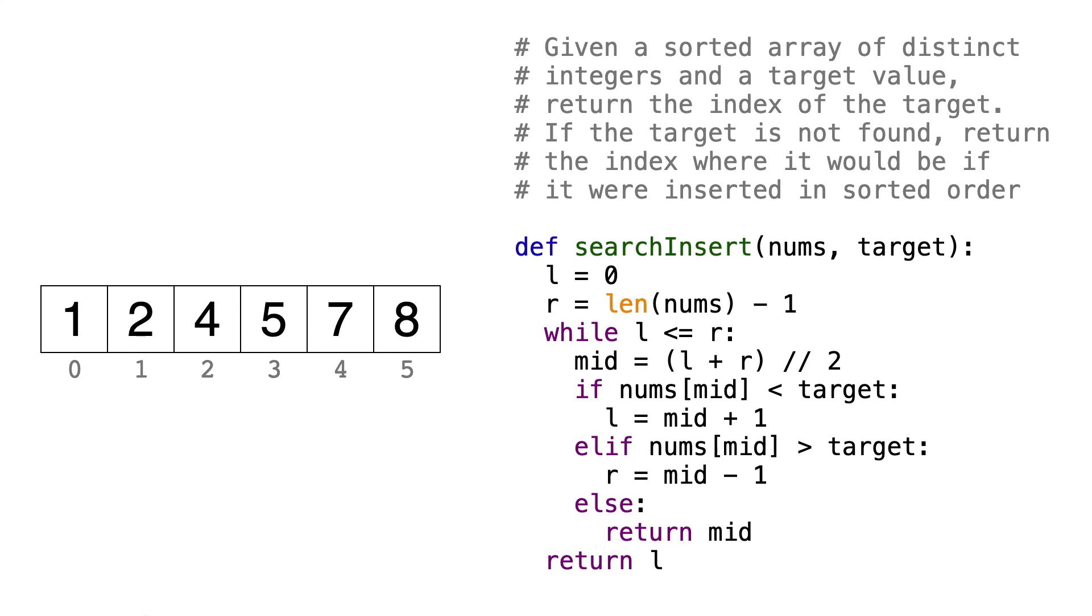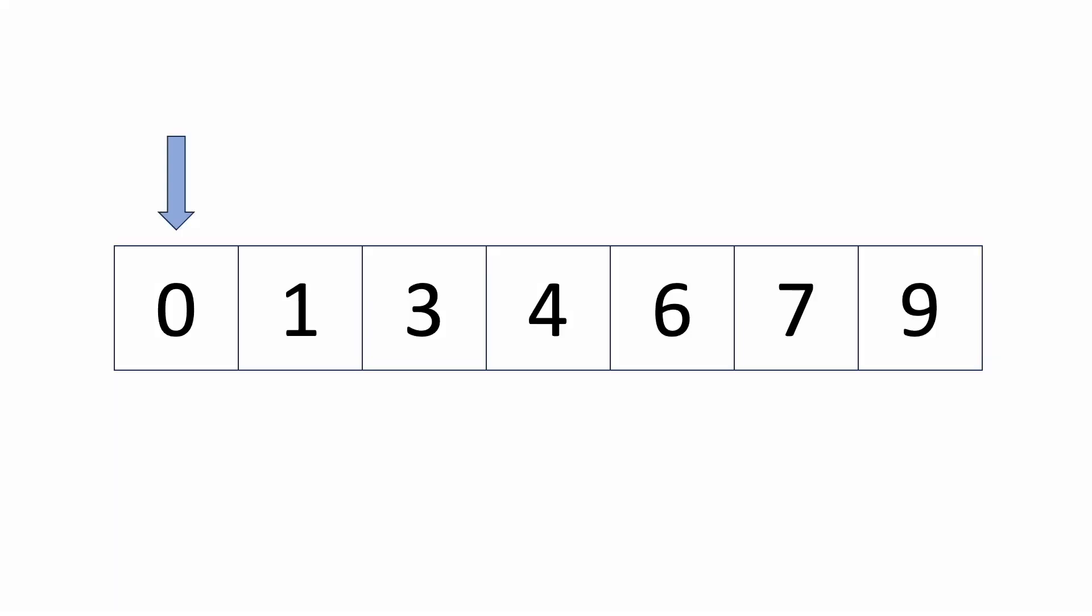Now there's one other major restriction. Our algorithm must run in O(log n) time. That makes things difficult, because now we can't just traverse the array one by one until we find the target. If the length of the array is n, then in the worst case, we'd have to look at n elements, so the algorithm runs in O(n) time. Instead, we can take advantage of the fact that the array is sorted and use binary search.